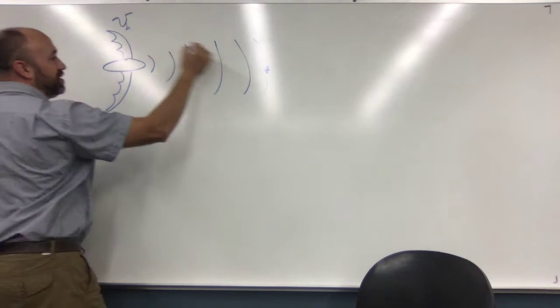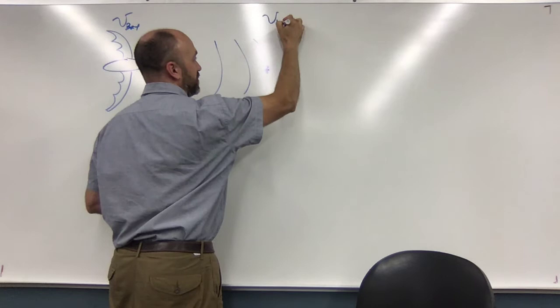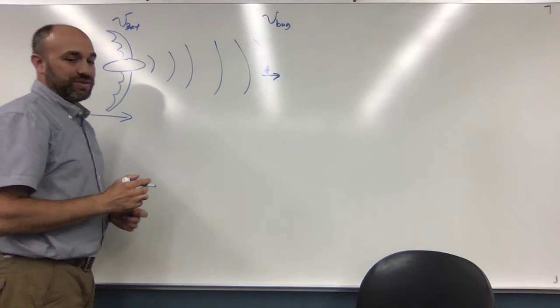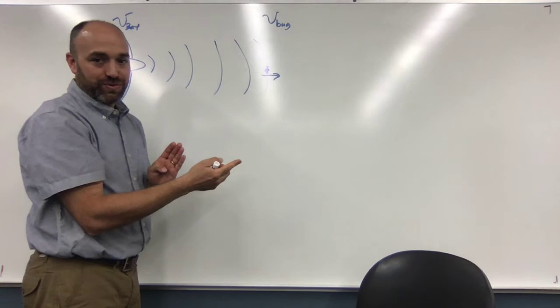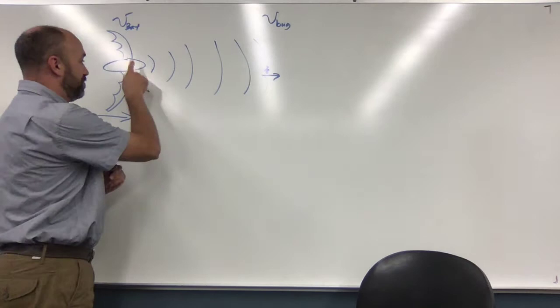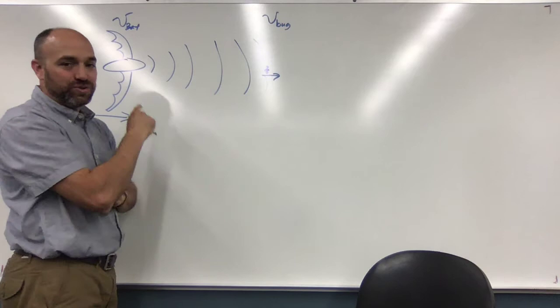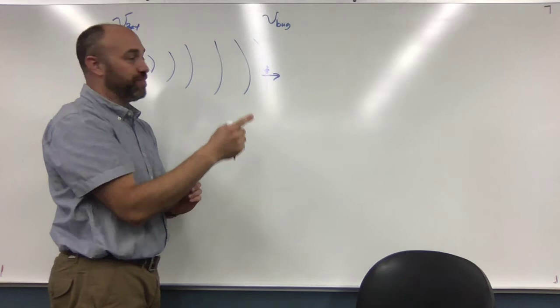We've got the speed of the bat here—they both start with B, I'll call it bat—and speed of the bug here. This one's traveling this way, this one's traveling this way, and we'll use the Doppler effect for what the bug observes, which is not what the question tells you. The question gives you the bat is the source and the observer. But it's a two-step process. Step one: the bat is the source and the bug is the observer.